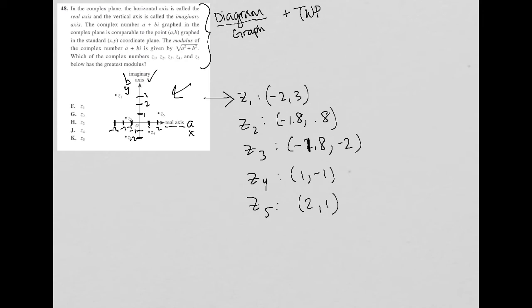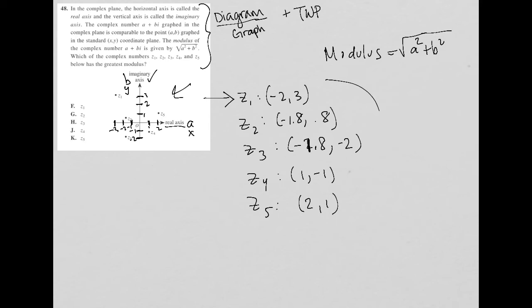The modulus of the complex number A plus BI is given by the square root of A squared plus B squared, so that's important to know. Modulus equals the square root of A squared plus B squared. Which of the complex numbers Z1, Z2, Z3, Z4, and Z5 has the greatest modulus? Now we see that these coordinate values become very valuable because we can plug each of these ordered pairs into the modulus formula and see which one is largest.